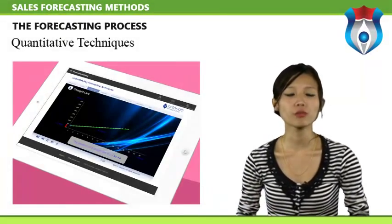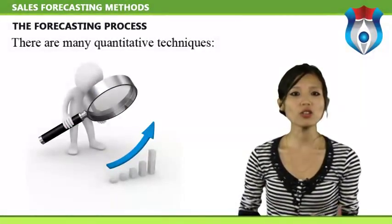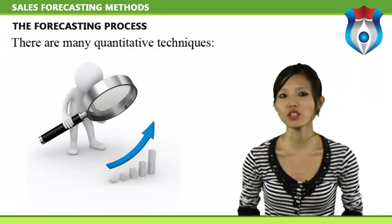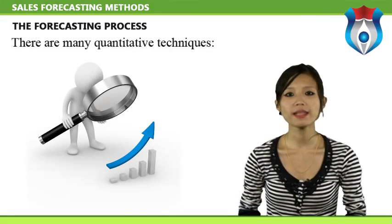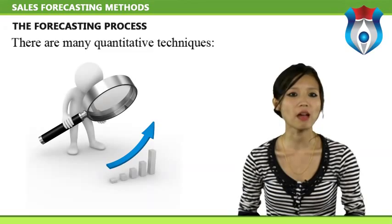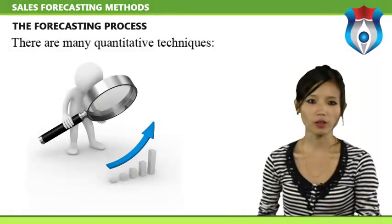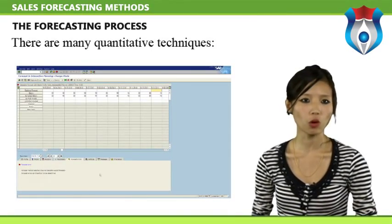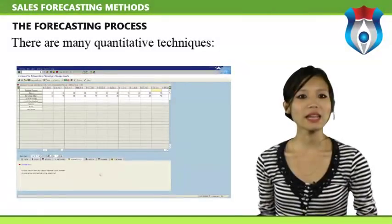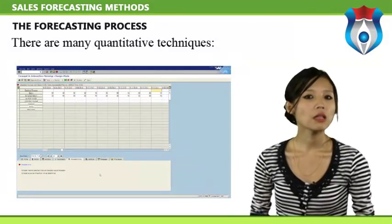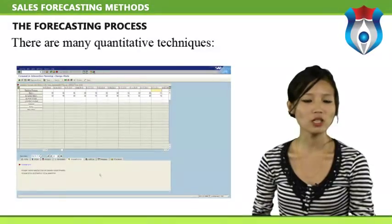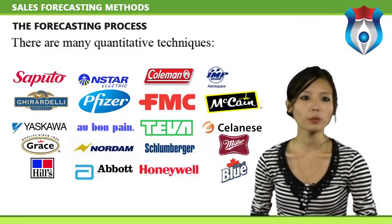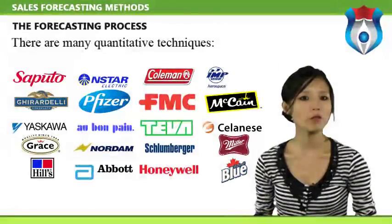Quantitative techniques are now very popular as a result of sophisticated computer packages. There are many quantitative techniques: regression analysis statistically relates sales to one or more explanatory independent variables; exponential smoothing makes an exponentially smoothed weighted average of past sales trends and seasonality to derive the forecast; moving average takes an average of a specified number of past observations to make a forecast; Box-Jenkins uses the auto-correlative structure of sales data to develop auto-regressive moving average forecasts; trend line analysis fits a line to sales data by minimizing the squared error between the line and actual past sales values, then projects that line into the future.